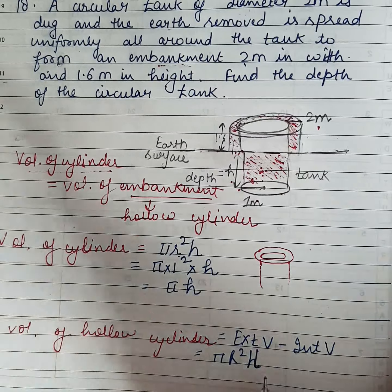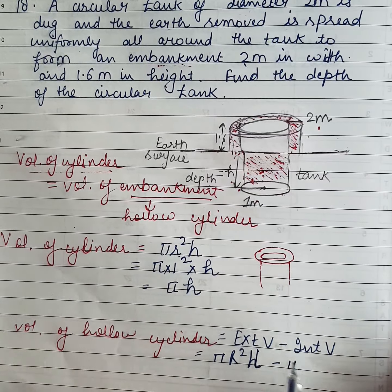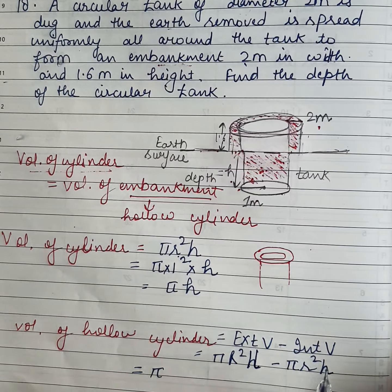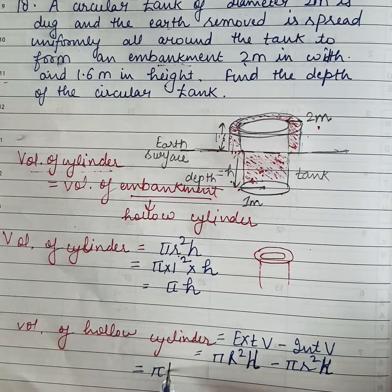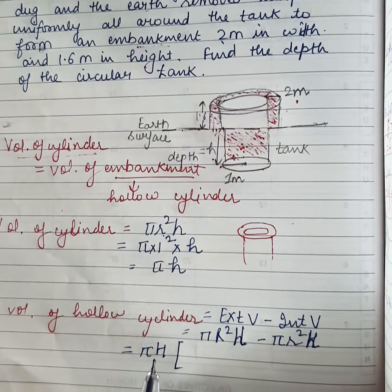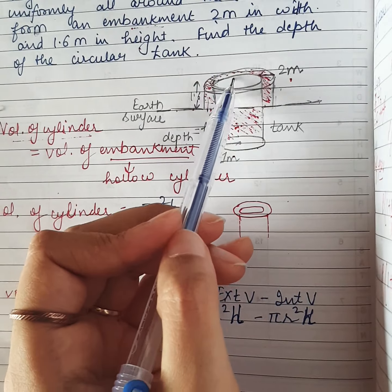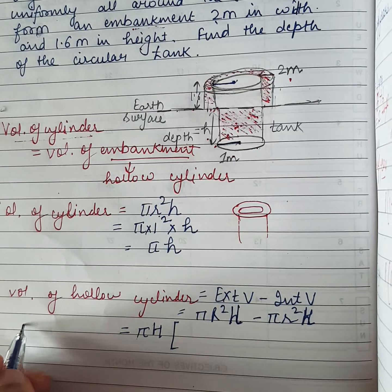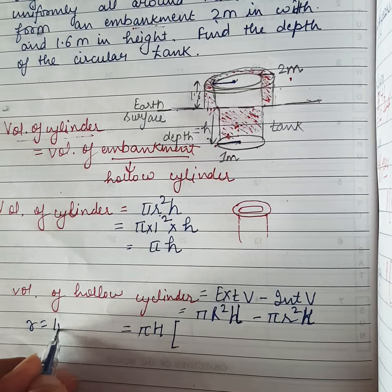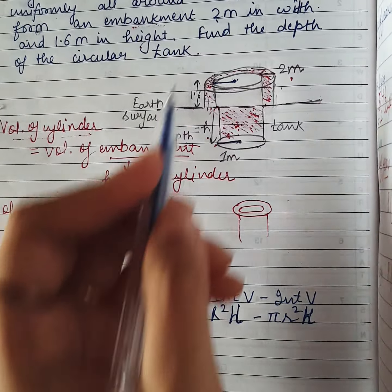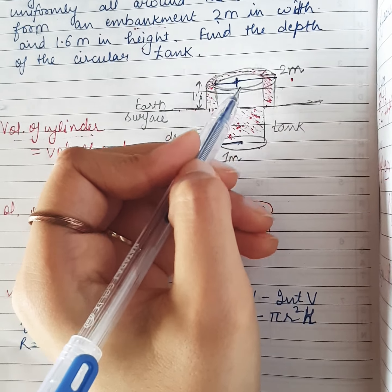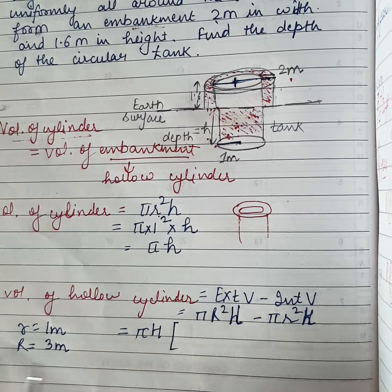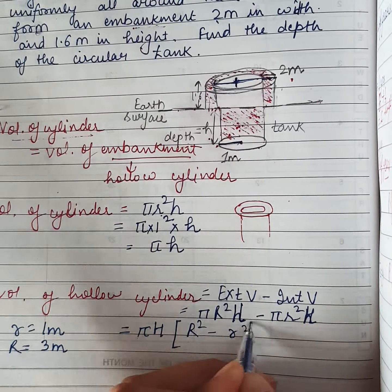Let us call it capital H to avoid symbol confusion. Internal volume is pi small r squared h. Taking pi common, the height of embankment remains the same whether inside or outside — internal or external. Internal radius small r will be the same as the tank radius, so small r equals 1 meter. And capital R is 1 plus the width 2, so capital R equals 3 meters.